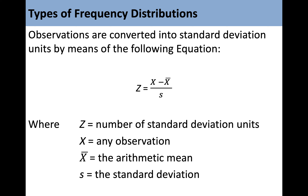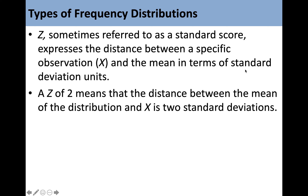Observations are converted into standard deviation units using the Z-score equation: Z equals X minus x-bar over S, where Z equals the number of standard deviation units, X equals the specific observation, x-bar is the arithmetic mean, and S equals the standard deviation. Z, sometimes referred to as a standard score, expresses the distance between a specific observation X and the mean in terms of standard deviation units. A Z of 2 means the distance between the mean and X is two standard deviations.